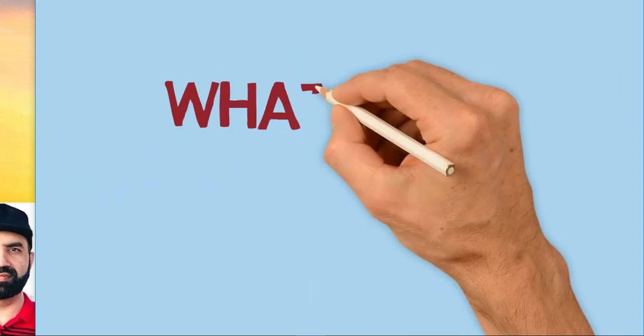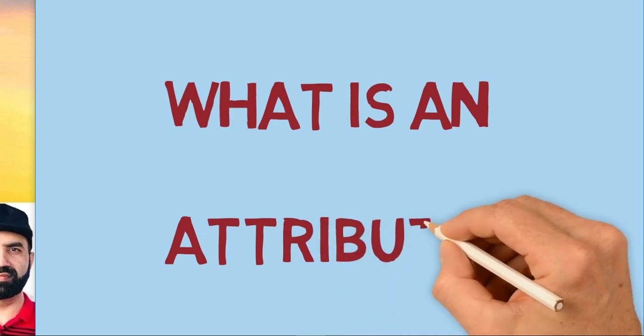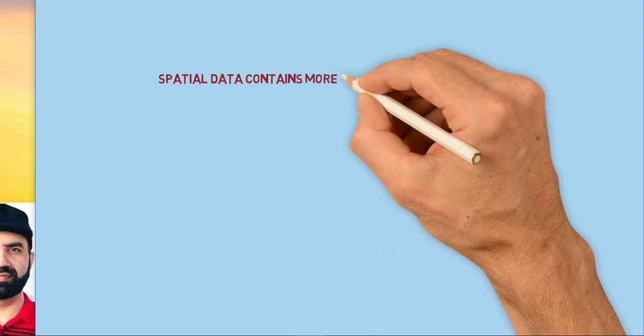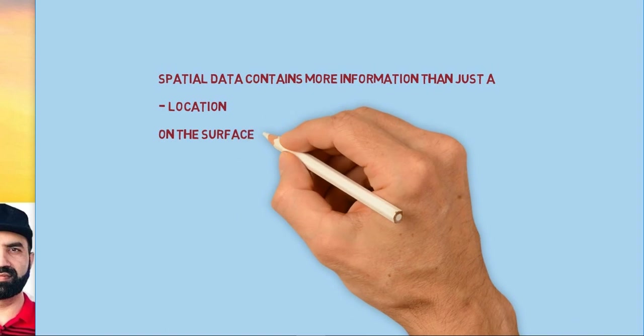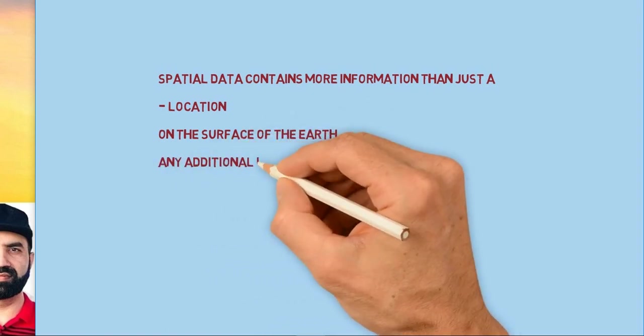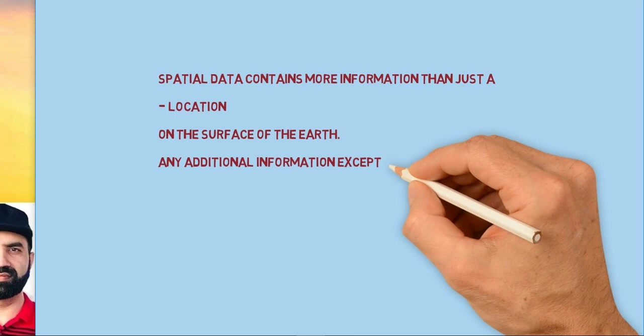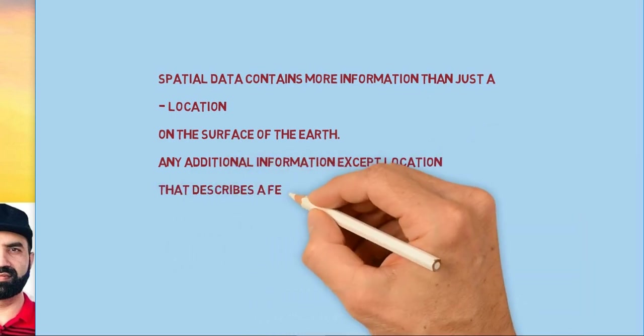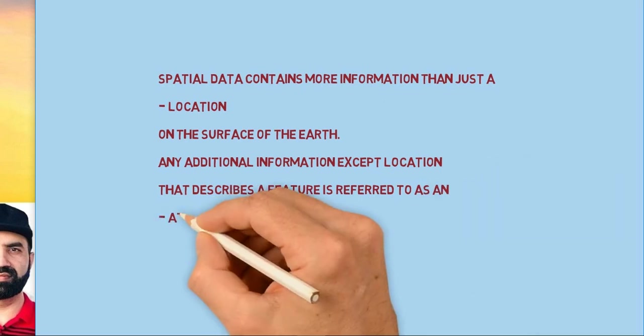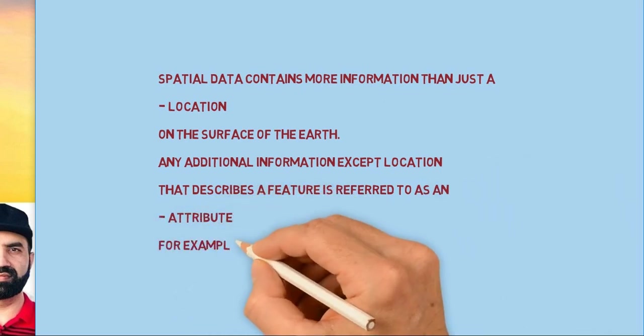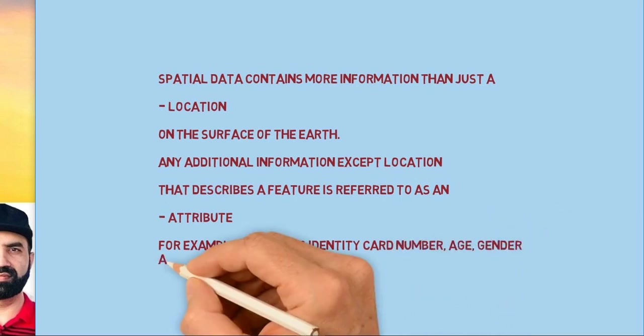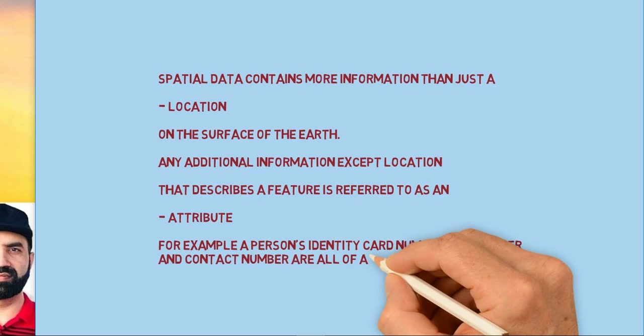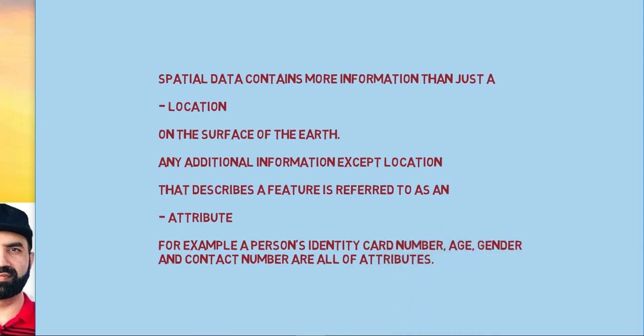What is an attribute? Spatial data has location plus other information as well. The other information except that location which represents a feature is known as attribute. For example, a person's identity code number, age, gender, and contact number are all examples of attributes.